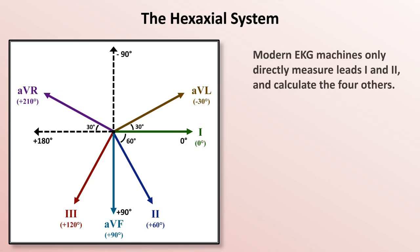Interestingly, modern EKG machines only directly measure leads one and two, and the other four are calculated using these equations.